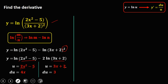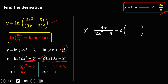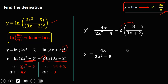To solve for the derivative: y prime equals — for the first term — du over u, so 4x over (2x squared − 5), then minus — for the second term — write the numerical coefficient 2 times the derivative of ln(3x + 2), which is du over u: that's 3 over (3x + 2). Multiplying 2 by 3, y prime equals 4x over (2x squared − 5) minus 6 over (3x + 2). So this is now the derivative.